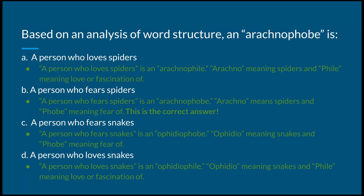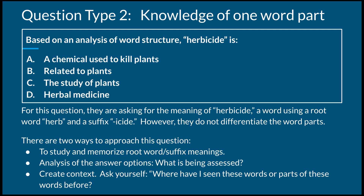Let's go through one more question together. In our next sample question, we're looking for knowledge of only one word part. Here's our question: based on an analysis of word structure, herbicide is A, a chemical used to kill plants; B, related to plants; C, the study of plants; or D, herbal medicine. For this question, we're looking for the meaning of herbicide — a word using the root word herb and the suffix -cide. However, the question does not differentiate the word parts for you; you have to come to that conclusion on your own.